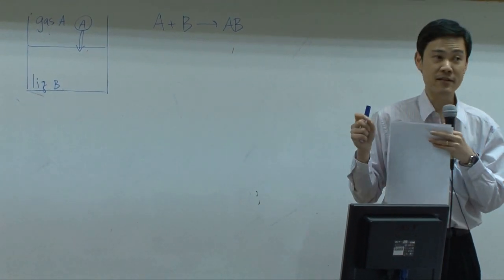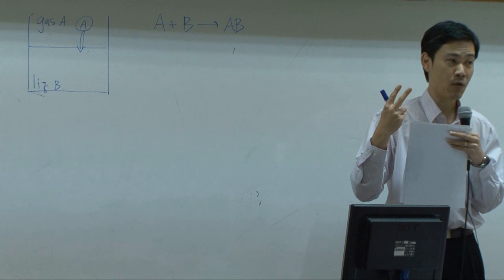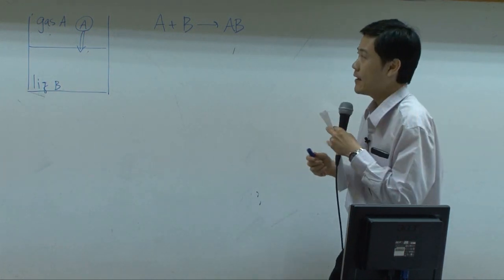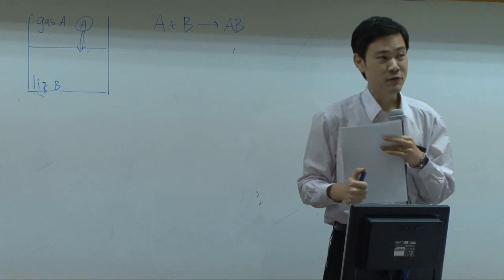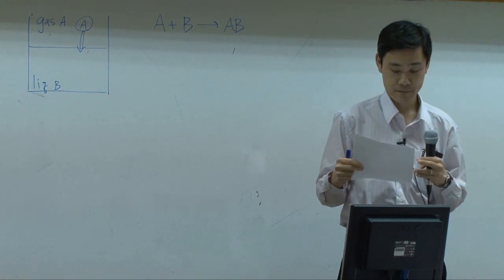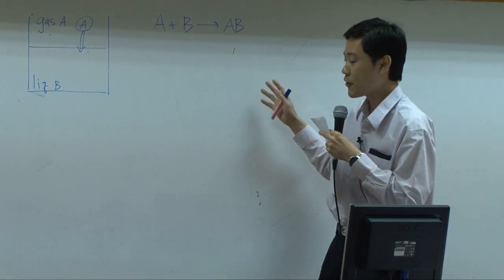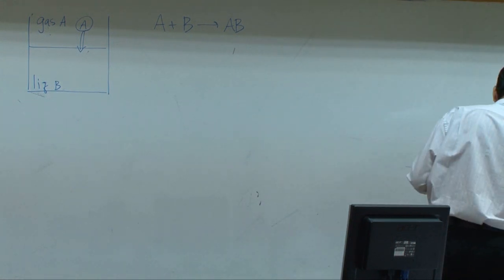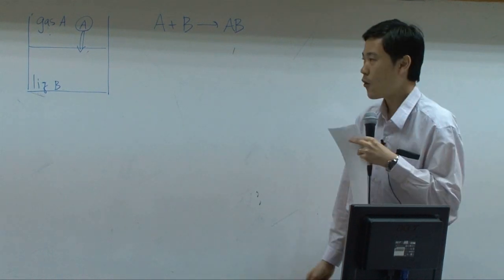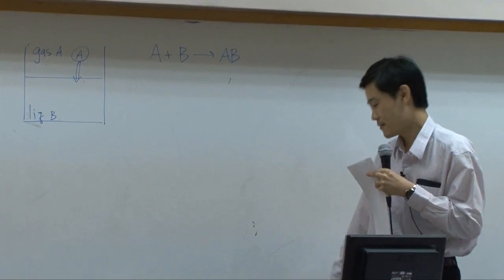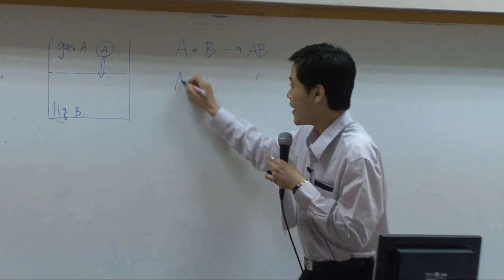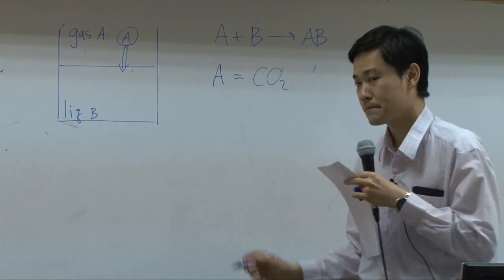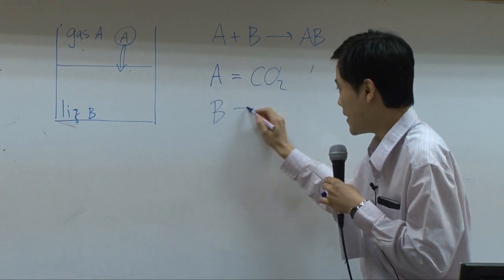Now, how many species do we have in our system? Three. Can we use Fick's law? No, because Fick's law is applied for two species only — for binary systems.